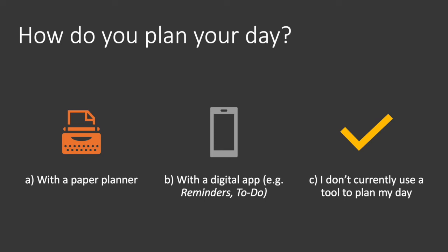Now we're going to look at planning your day — day-to-day task management. How do you plan your day right now? Is it with a paper planner, a digital app, or are you not using a tool right now? There's no right or wrong answer — it's entirely up to your personal preference. You might find a list on paper works for you, or a free app that syncs between your computer and cell phone, like Reminders or ToDo.